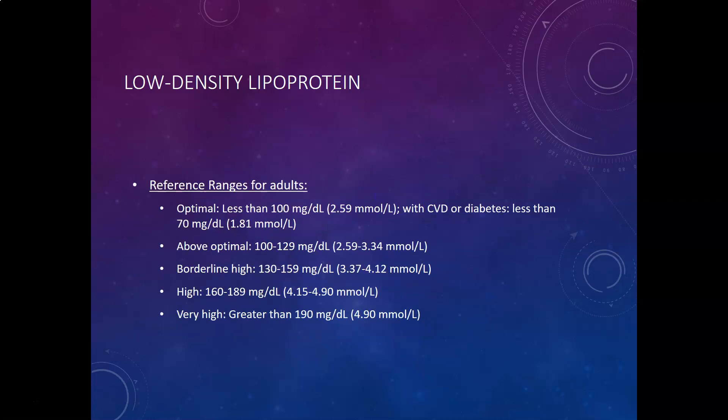The reference ranges for adults for LDL: optimal is less than 100 mg/dL — and less than 70 mg/dL if you have coronary vascular disease or diabetes. Above optimal is 100 to 129 mg/dL. Borderline high is 130 to 159 mg/dL. High is 160 to 189 mg/dL, and very high is greater than 190 mg/dL.